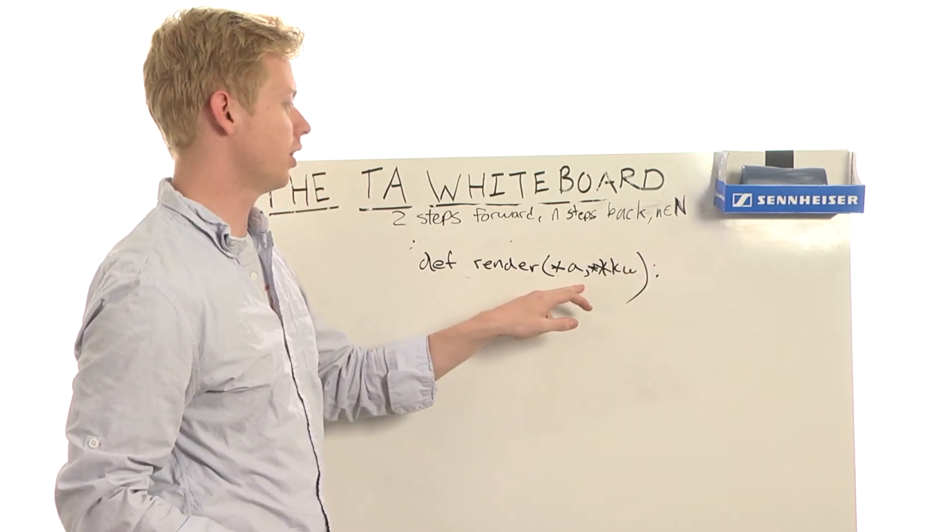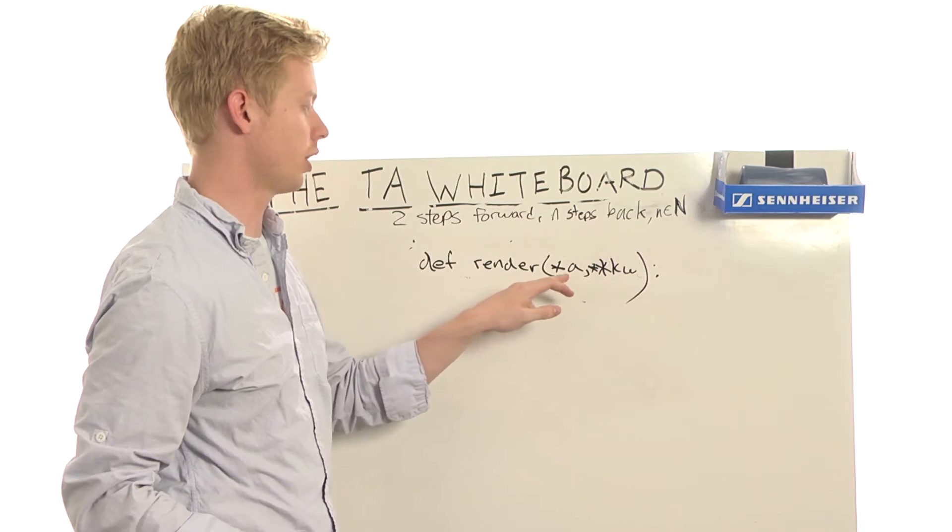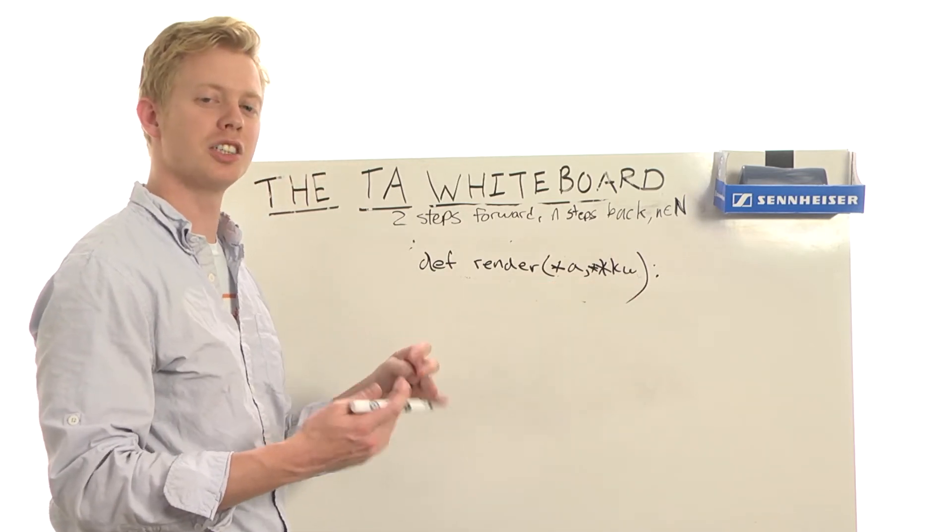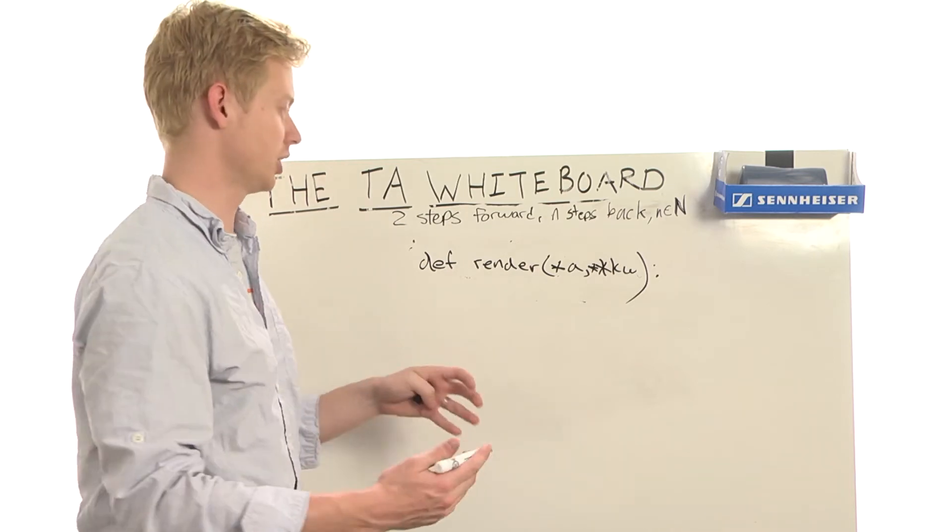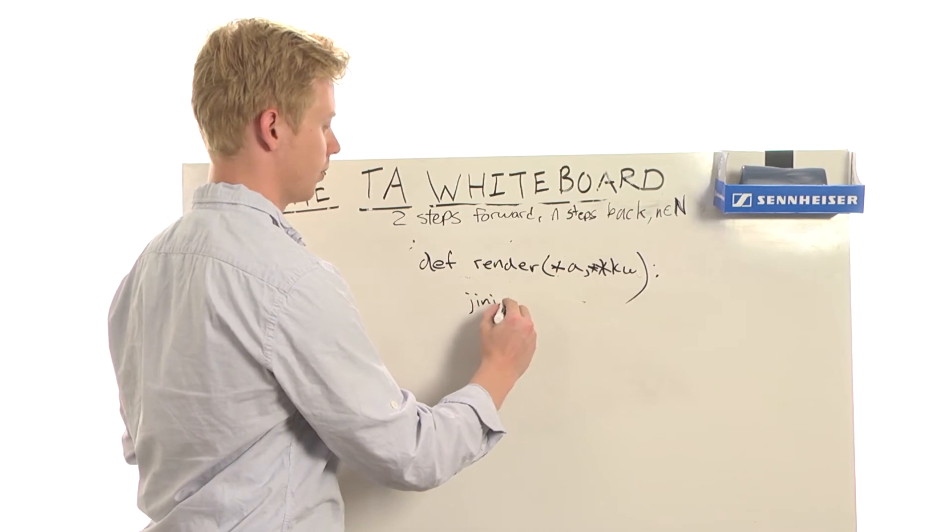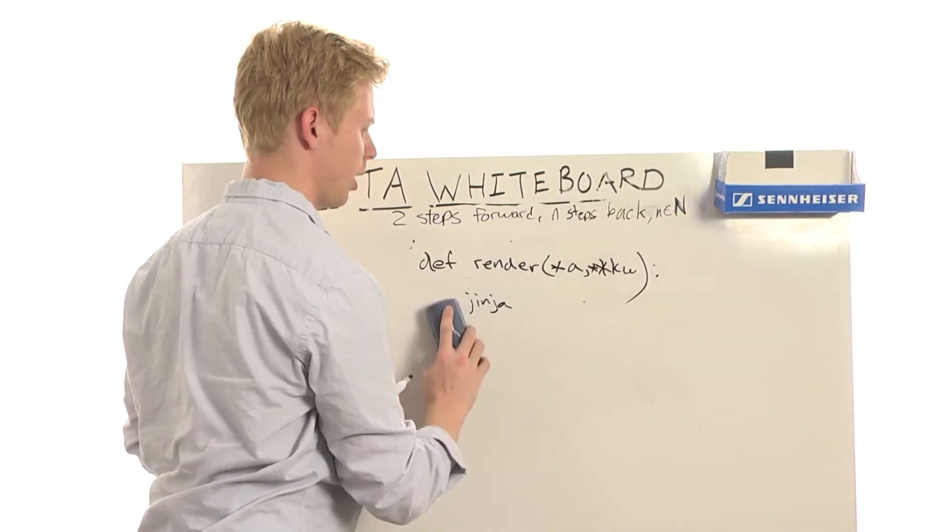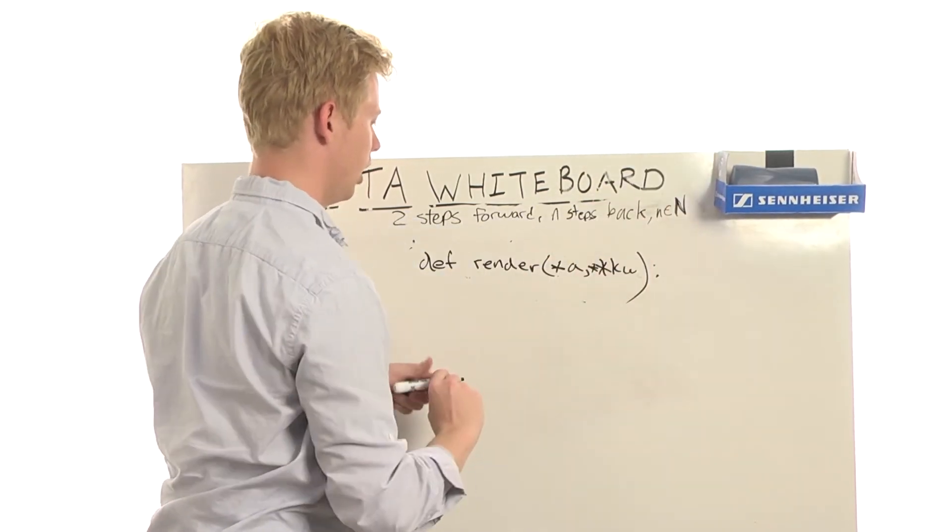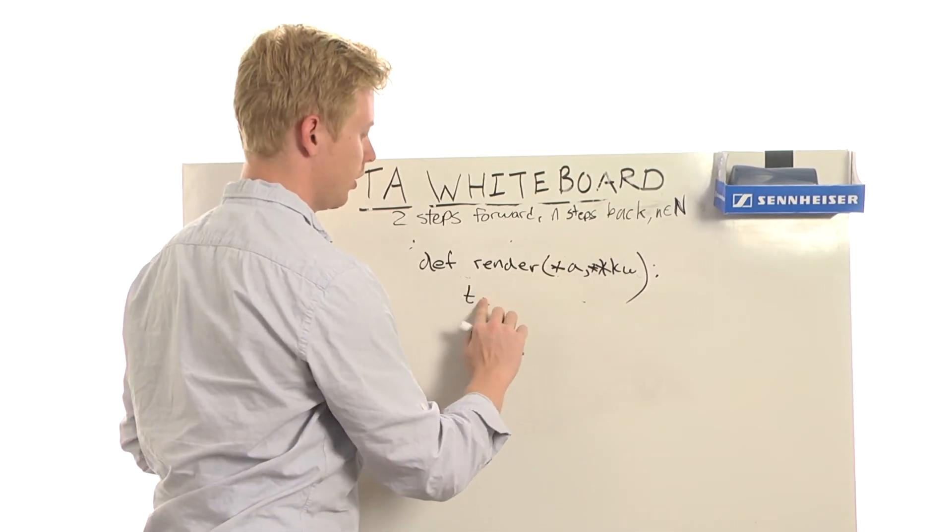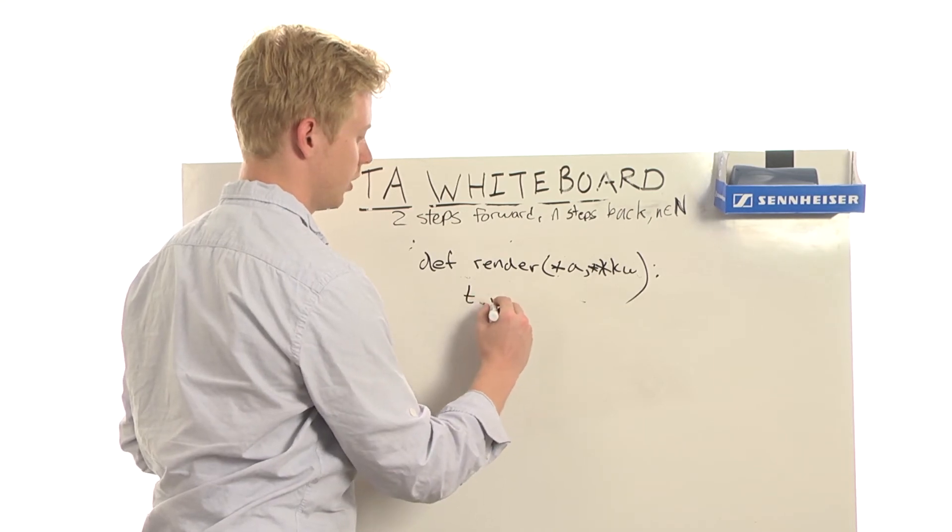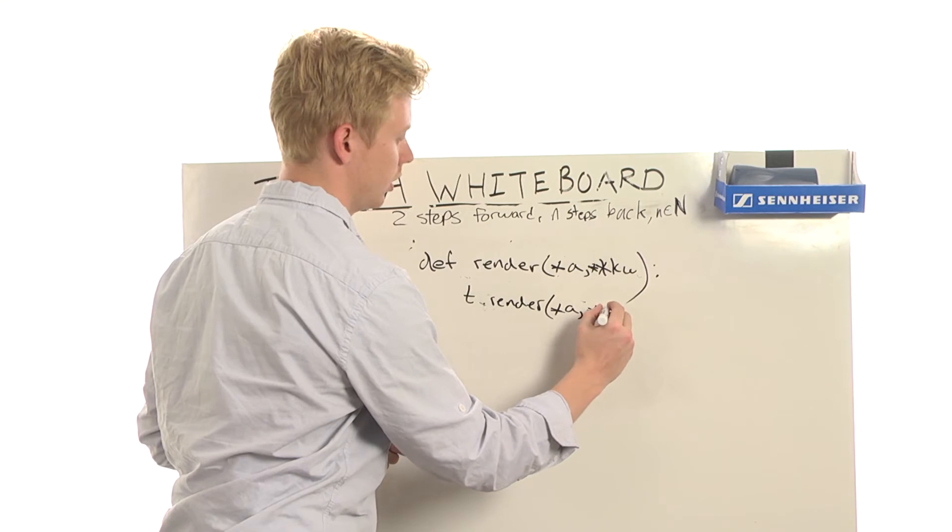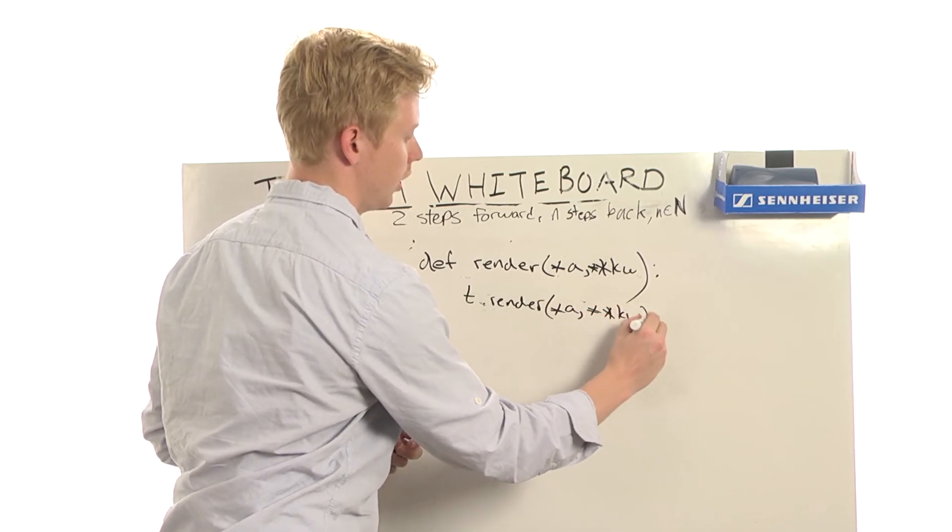So generally when you see this kind of construct in Python, star a, star star kw, that means they're writing a function that adds a little bit of behavior to another function. And so I have another function here. I think it's like some sort of Jinja rendering thing. I think actually what we say is template. You know, we have a template name. That's probably another argument in the function. And we may say like t dot render star a, star star kw.